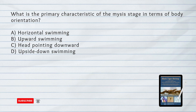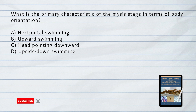What is the primary characteristic of the MISY stage in terms of body orientation? A. Horizontal swimming. B. Upward swimming. C. Head pointing downward. D. Upside down swimming.